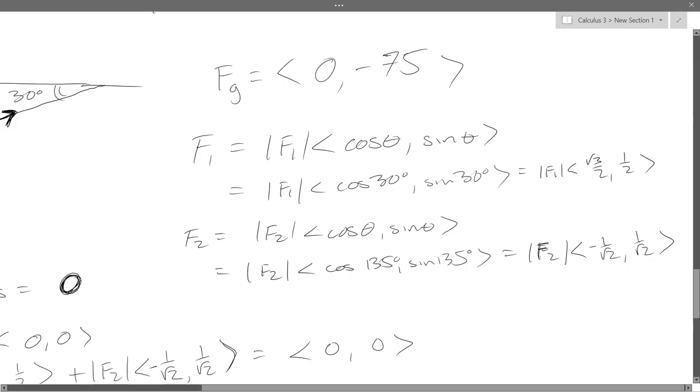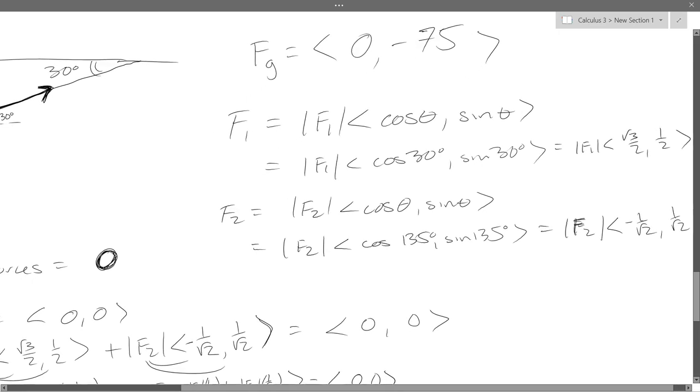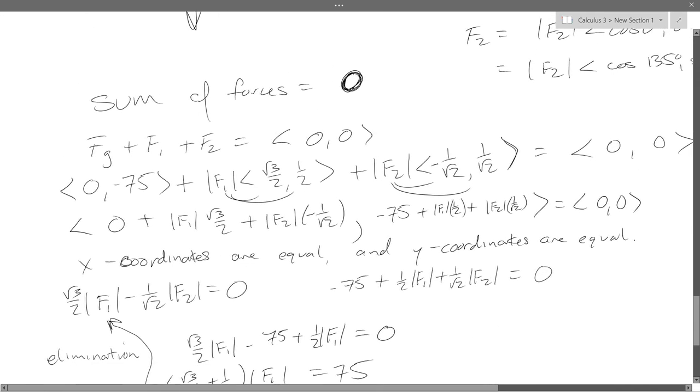So we add Fg, F1, and F2, and that needs to equal zero. Our forces come from these equations. Gravity force is easy, zero, negative 75. Force one, I don't know the magnitude, but I know the angle, so we leave it as magnitude force one times the unit vector in the right direction. Same thing for force two. We computed those over here on the right.